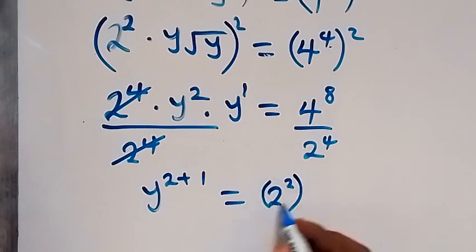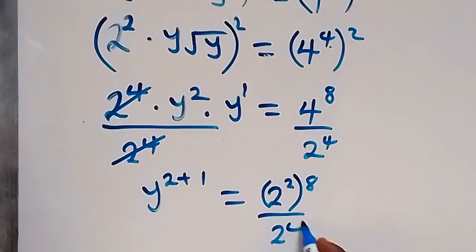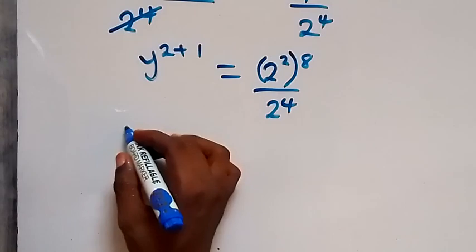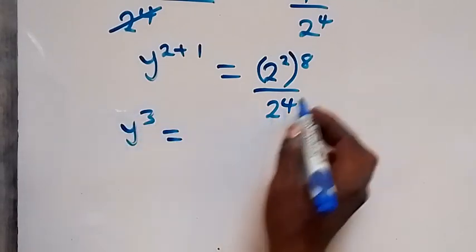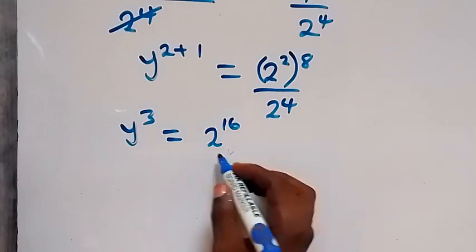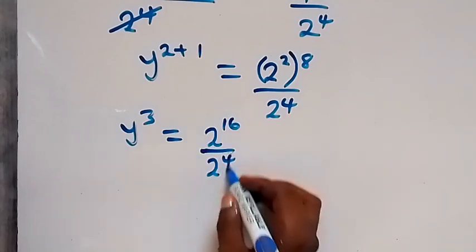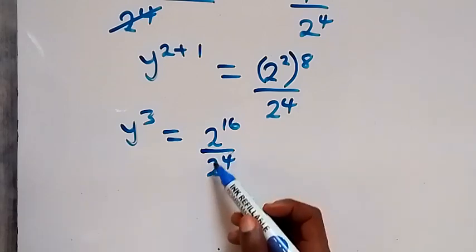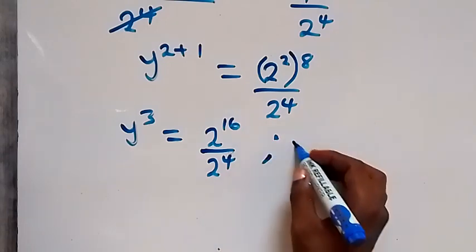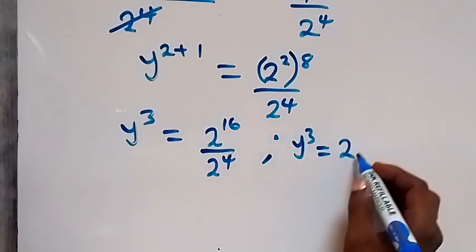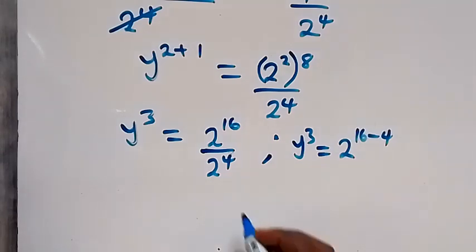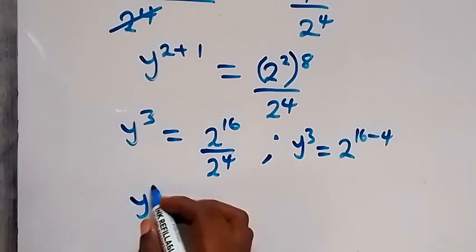So the right side becomes 2 raised to power 2, raised to power 8, divided by 2 raised to power 4. We can now write y raised to power 3 equals 2 raised to power 16 divided by 2 raised to power 4. By the law of indices, since we are dividing, we subtract the powers: y³ equals 2 raised to power 16 minus 4, and 16 minus 4 equals 12. So y³ equals 2 raised to power 12.